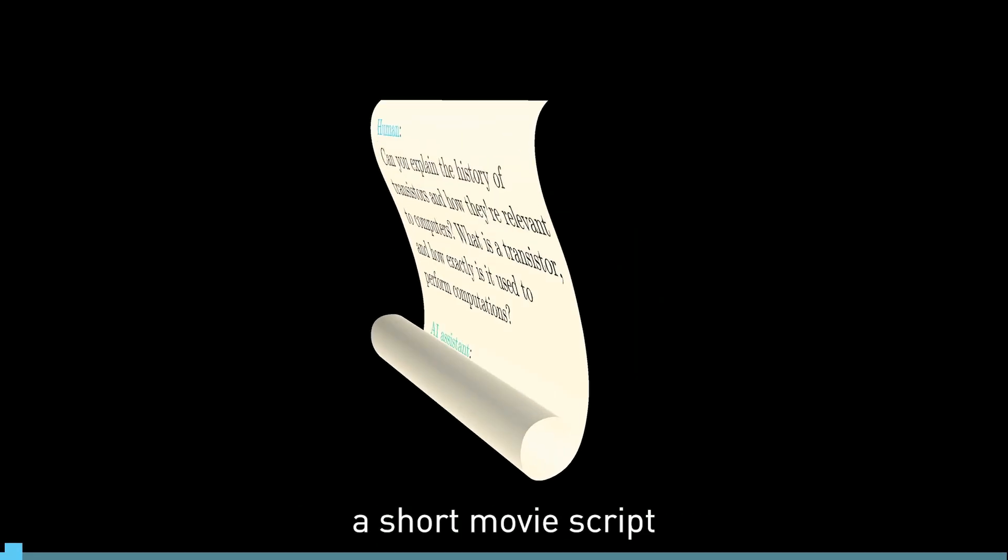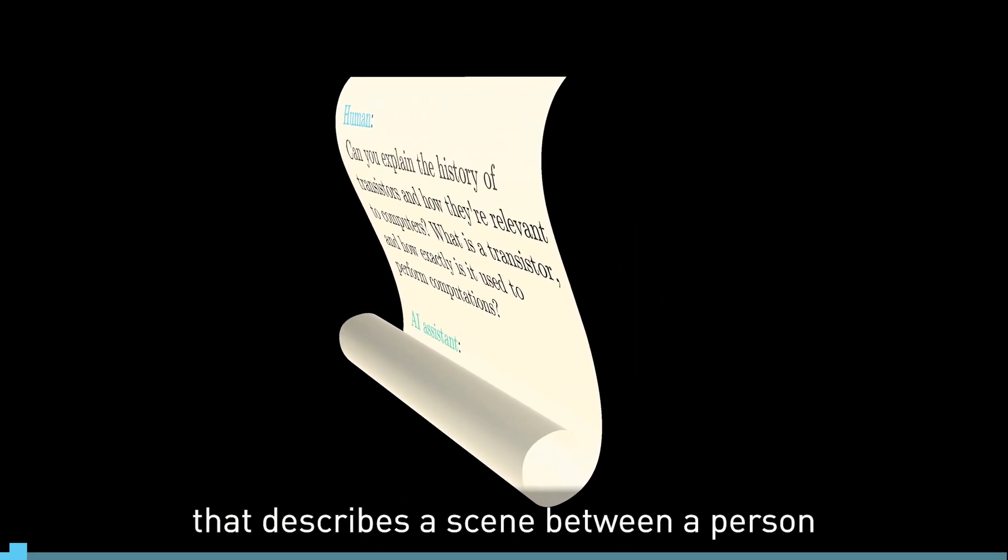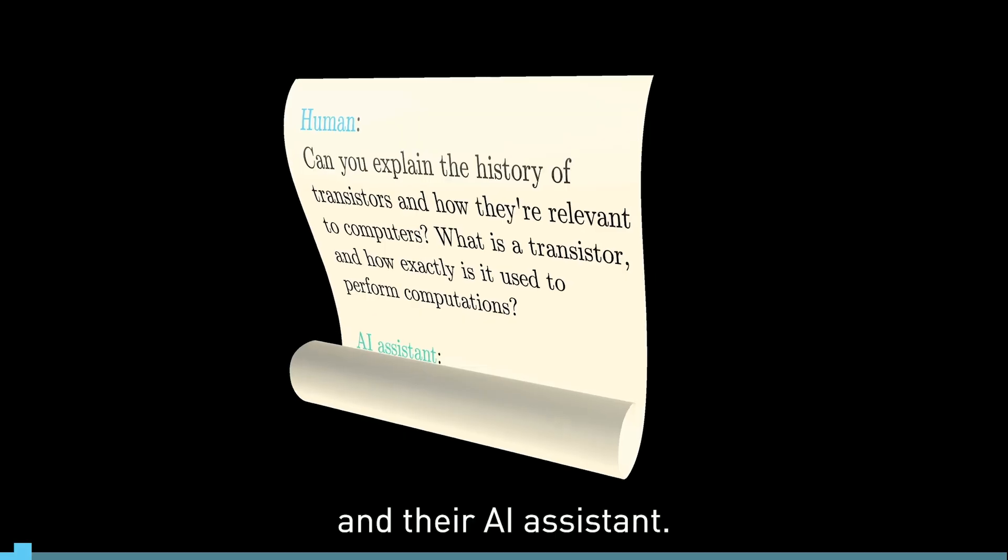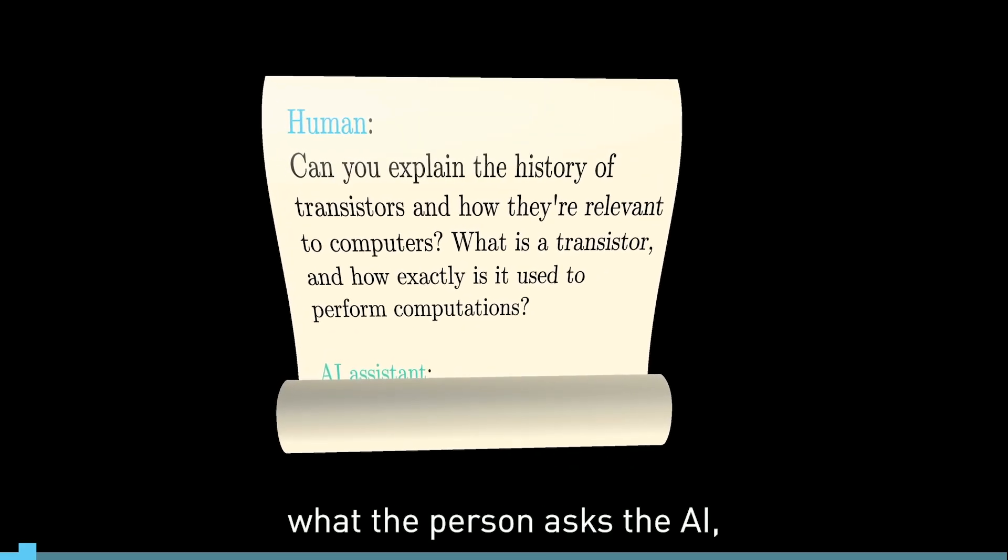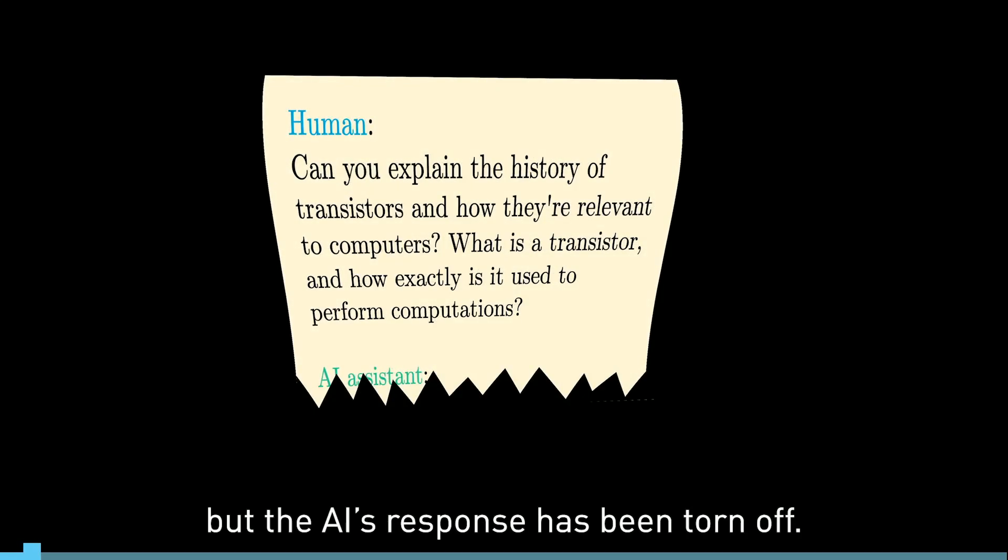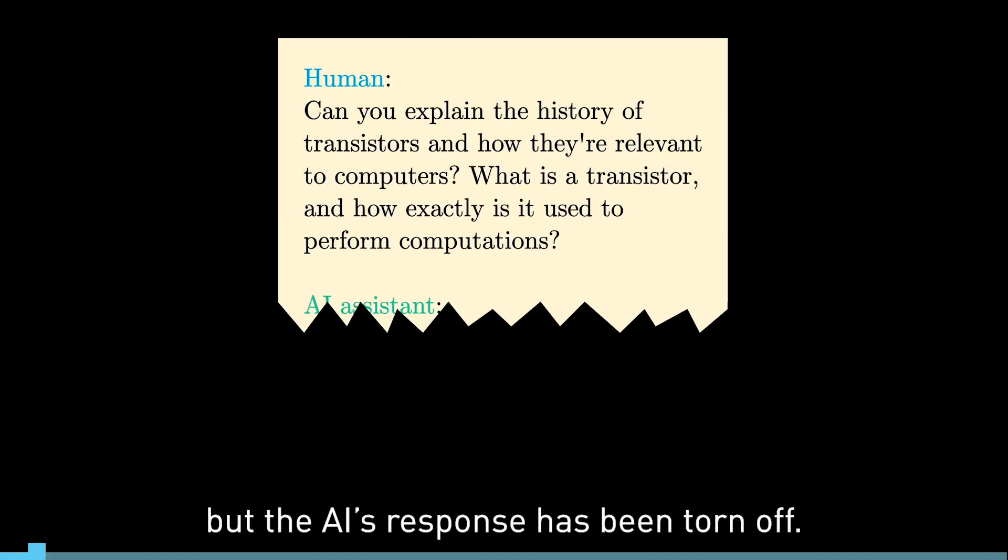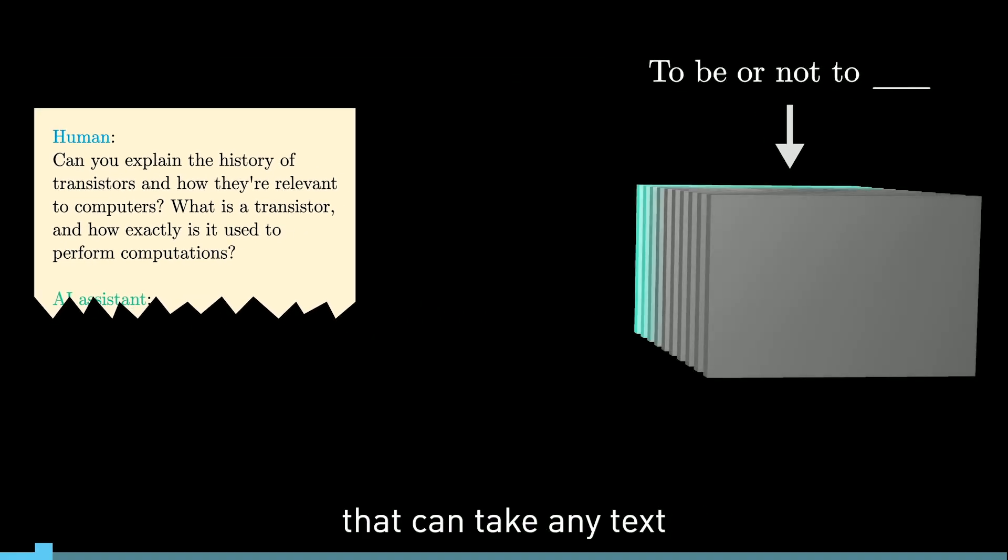Imagine you happen across a short movie script that describes a scene between a person and their AI assistant. The script has what the person asks the AI, but the AI's response has been torn off. Suppose you also have this powerful magical machine that can take any text and provide a sensible prediction of what word comes next.